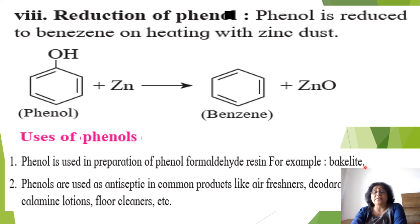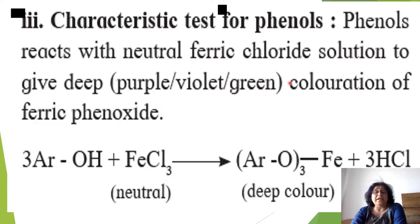Uses of phenol: used in preparation of phenol-formaldehyde resin (Bakelite); used as an antiseptic in products like air fresheners, deodorants, calamine lotions, and pore cleaners. Characteristic test: phenol treated with neutral ferric chloride solution gives a deep purple/violet/green coloration (ferric phenoxide + 3 HCl). This is the identification test for phenol.